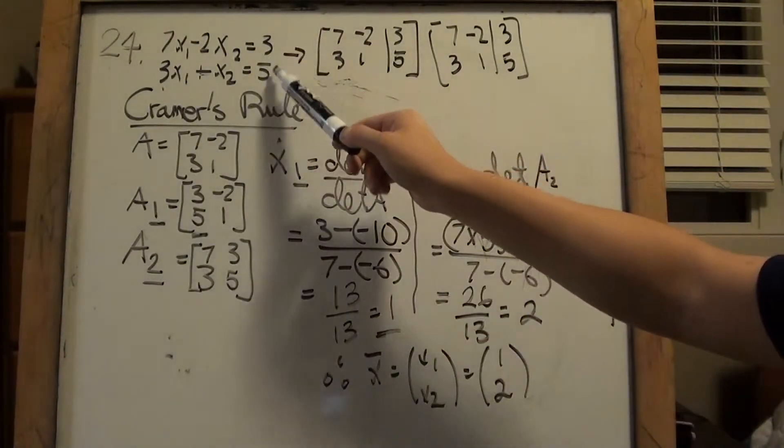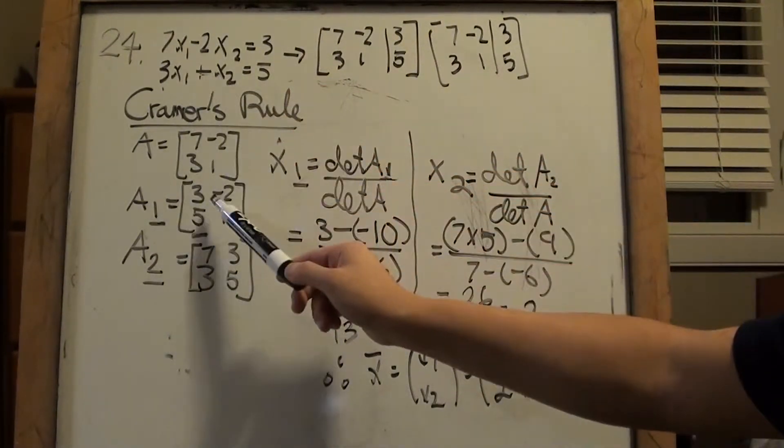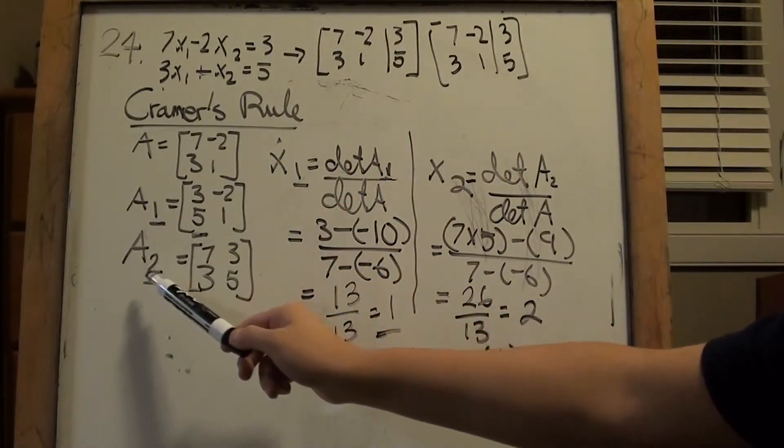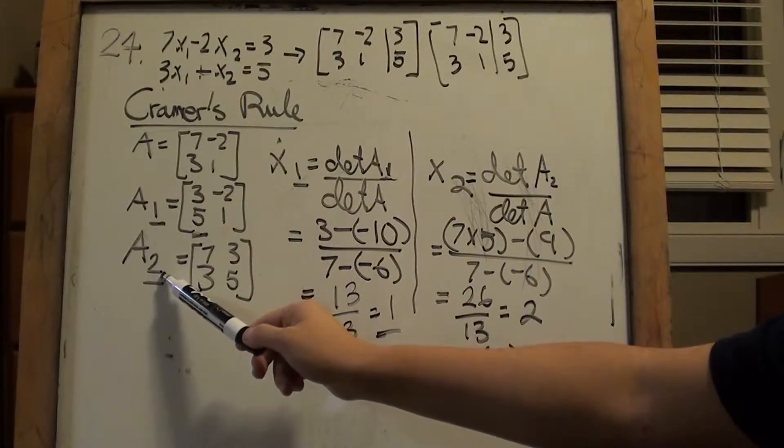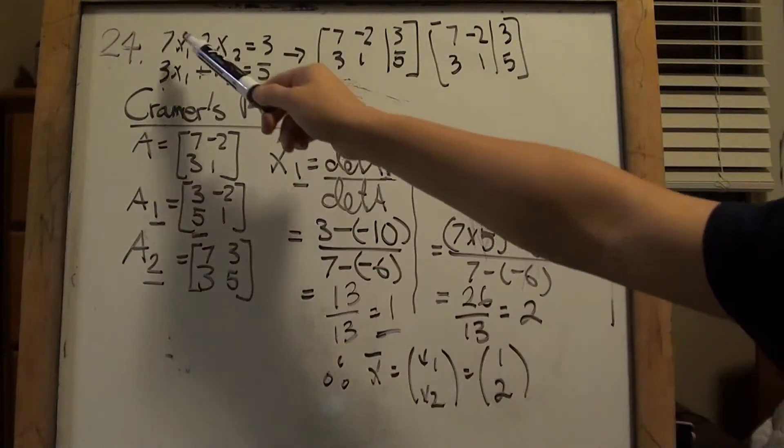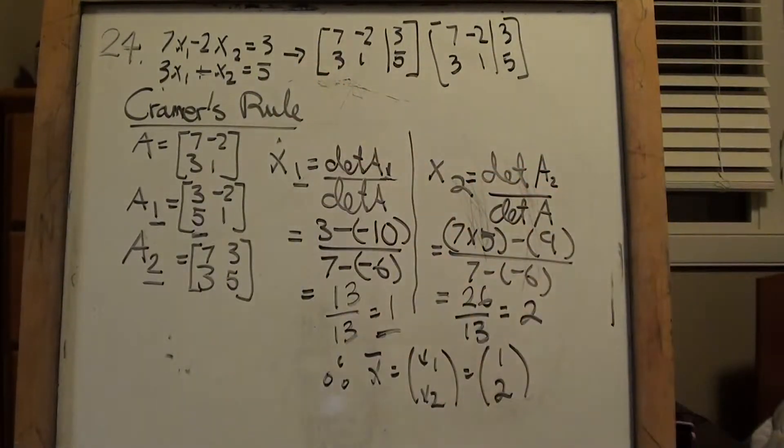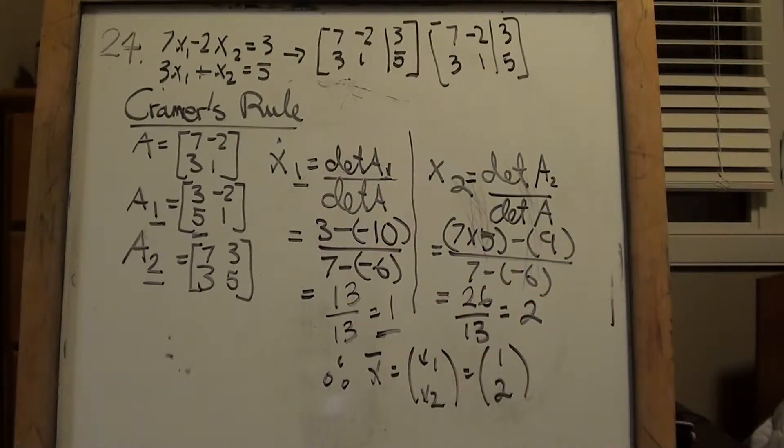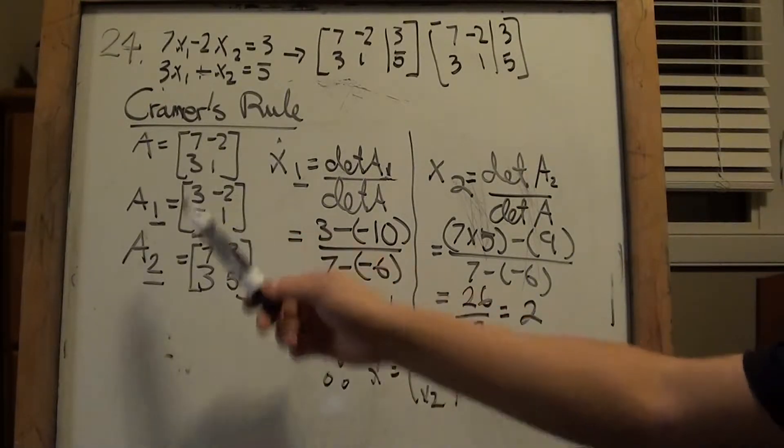Because the matrix dimension is 2 by 2, if we ignore the constants, we say 7, negative 2, 3, 1. Now this is where it gets interesting for Cramer's Rule. For A1, basically it just means whatever the constant column, the last column you had, that is going to replace column 1. So this is going to look like 3, 5, because that's what the column looks at. And then you just go about your business like you always were, negative 2 and 1, as you put it in there.